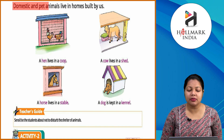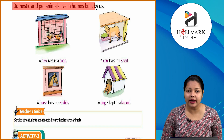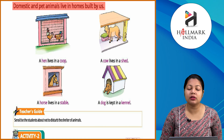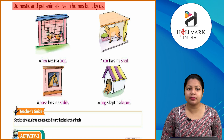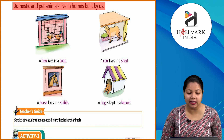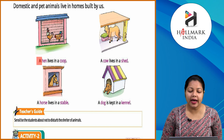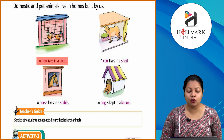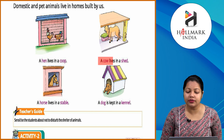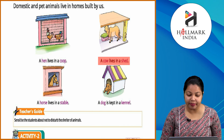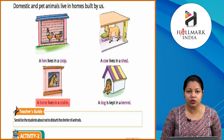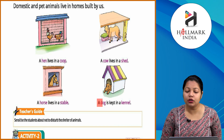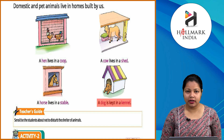Domestic and pet animals live in homes built by us. Jo hamare pet animals ya domestic animals hote hain woh un shelters mein rehte hain jo humans banate hain. A hen lives in a coop. A cow lives in a shed. A horse lives in a stable. A dog lives in a kennel.